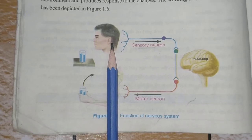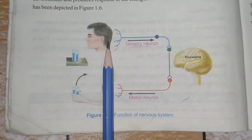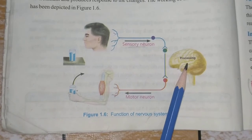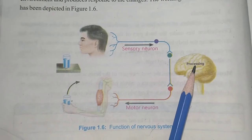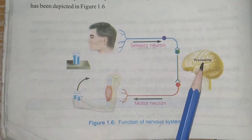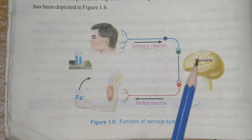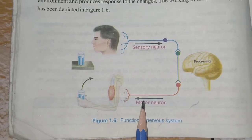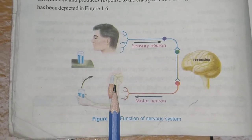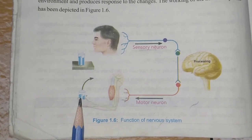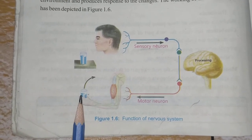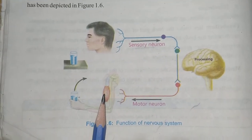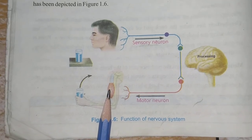The sensory neuron carries messages regarding stimuli in the form of nerve impulses from the receptor to the central nervous system. The central nervous system processes the message and transmits it via motor neurons. The motor neuron carries the nerve impulse to the body parts which produce a response. Such parts are called effectors. Muscles and glands in the body act as effectors.